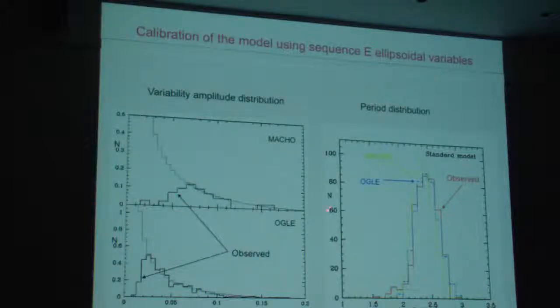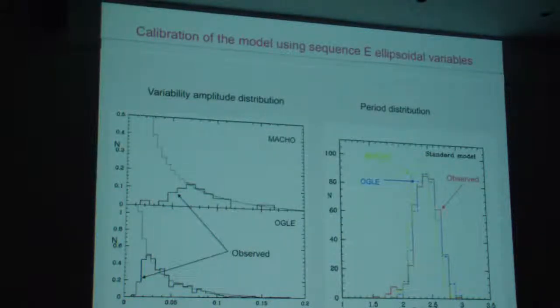This is the fit to the number period distribution. The red curve is the observed distribution. The blue dotted curve is the OGLE fit. And you can see that's extremely good. The MACHO curve is a little bit lower there, but it's still a reasonably good fit to the data.